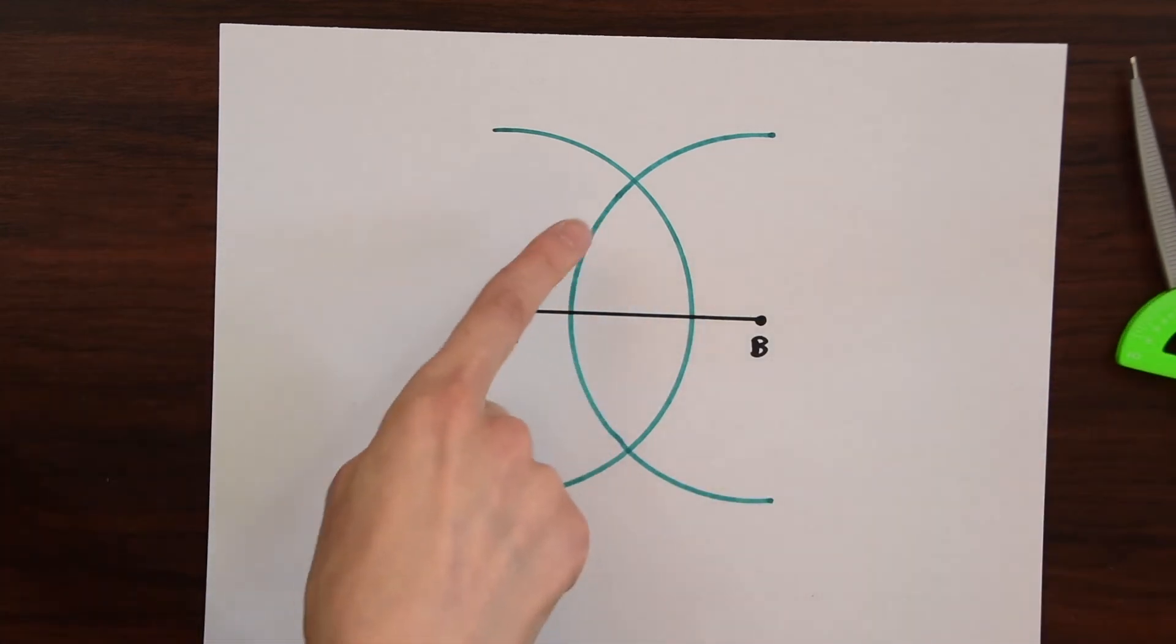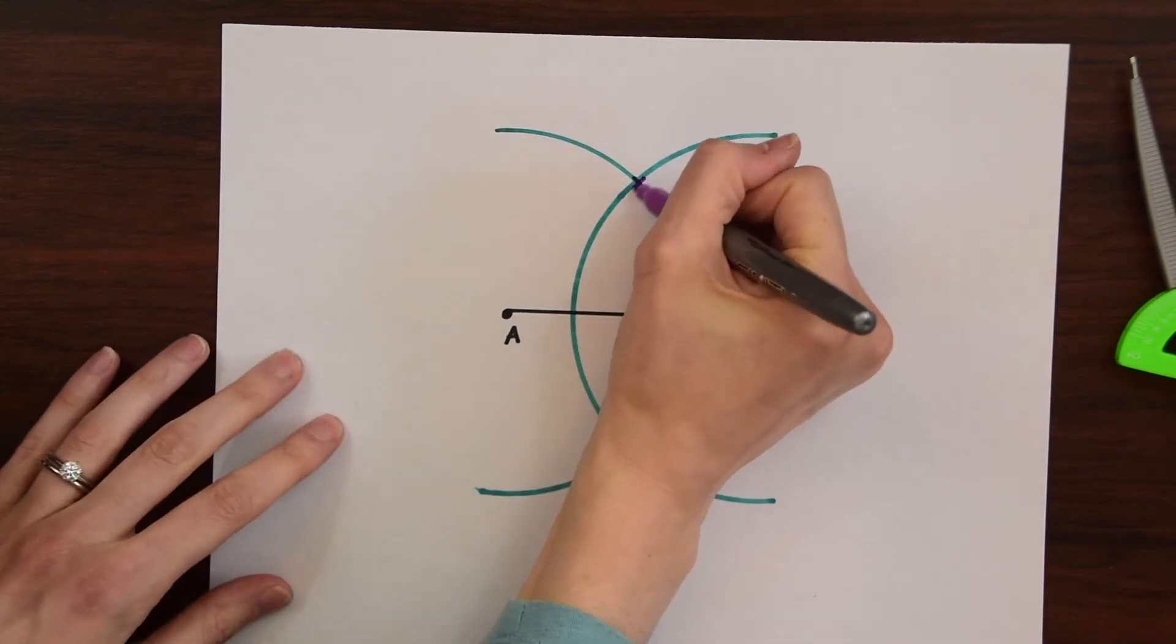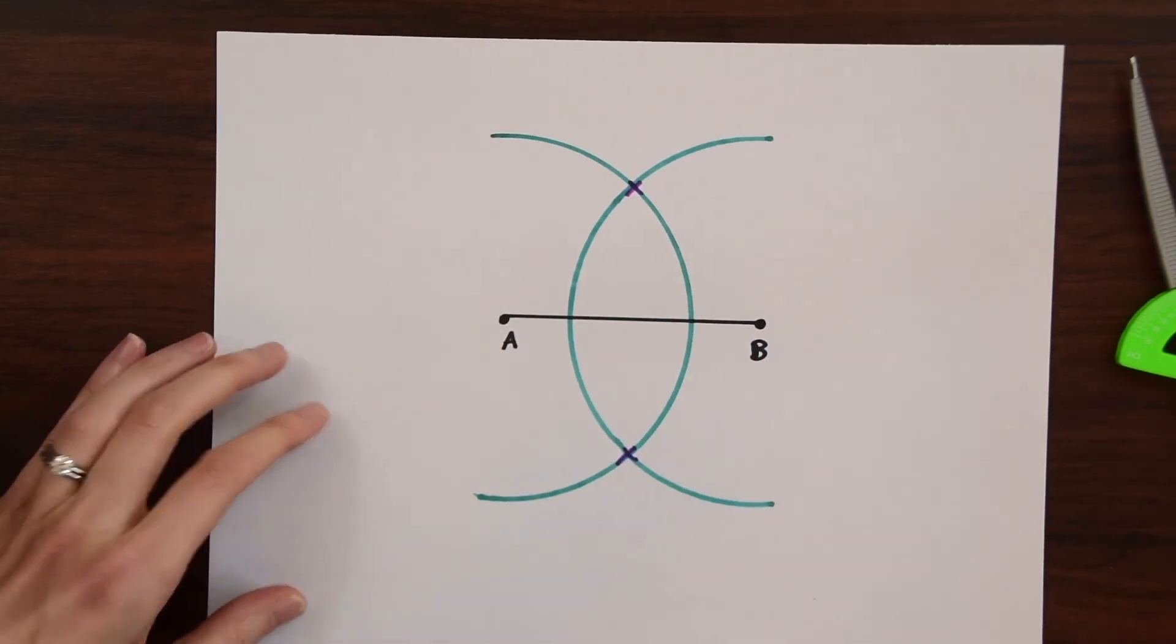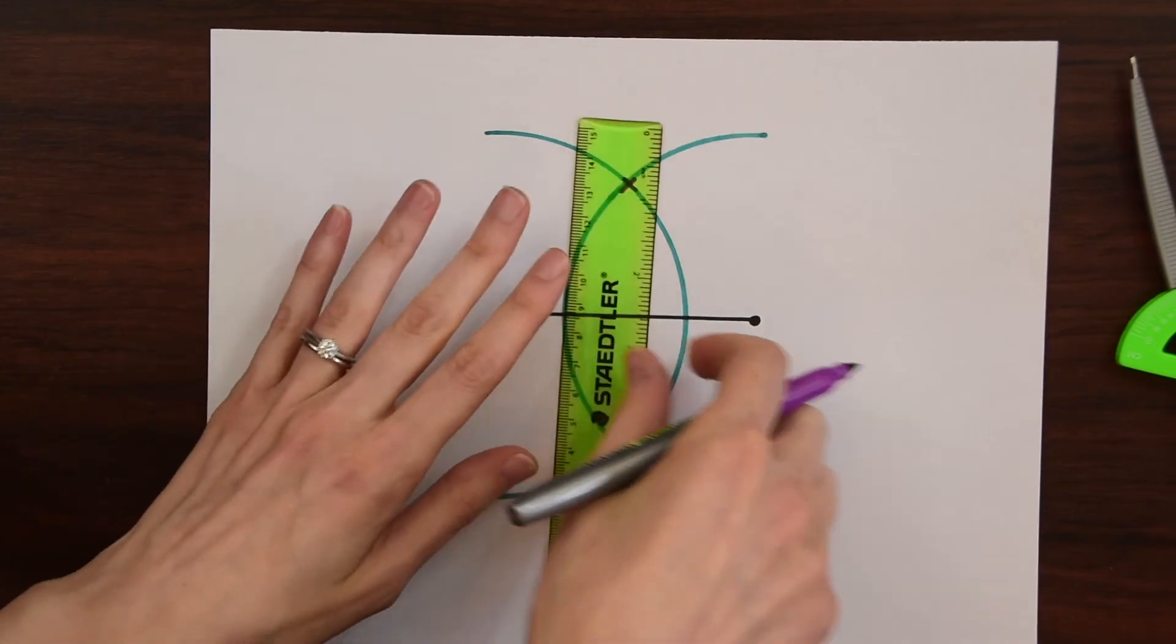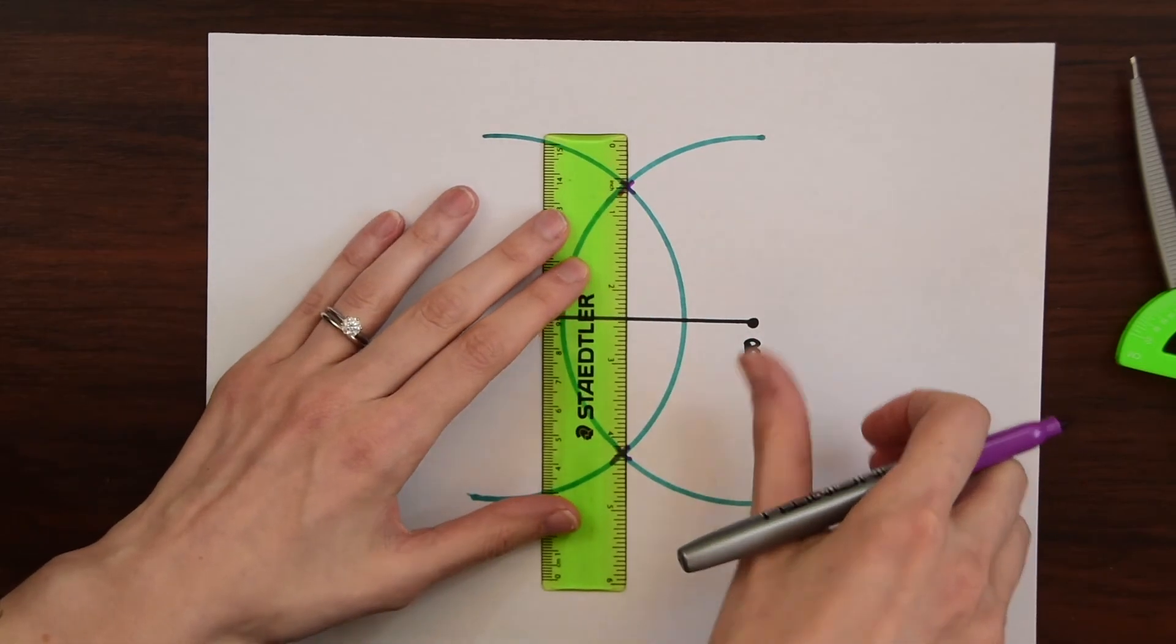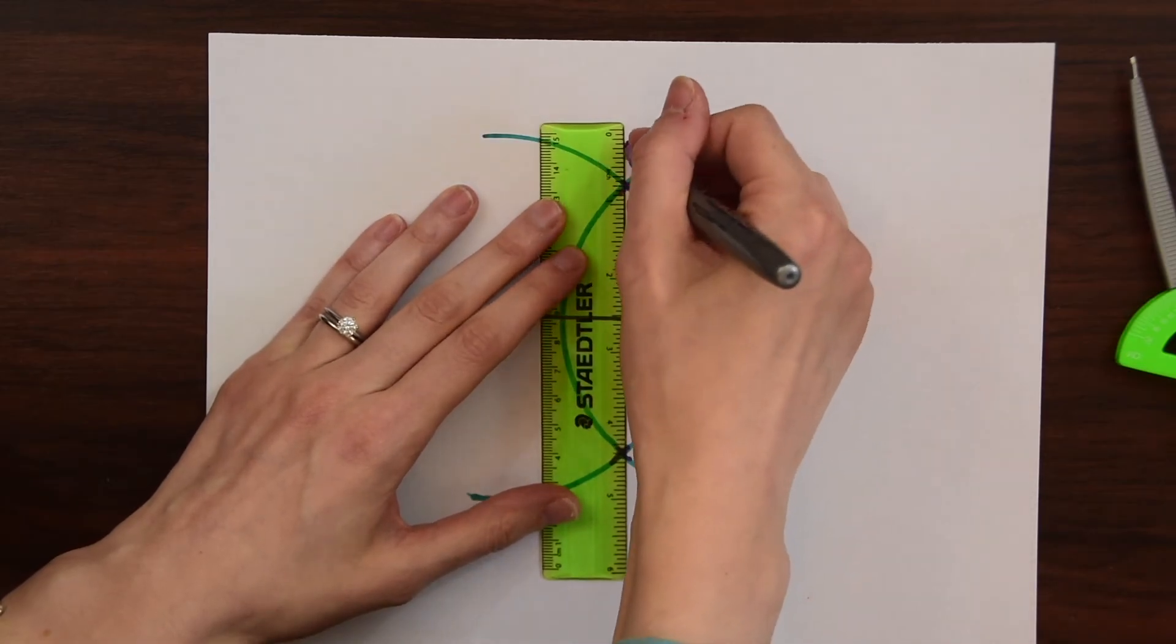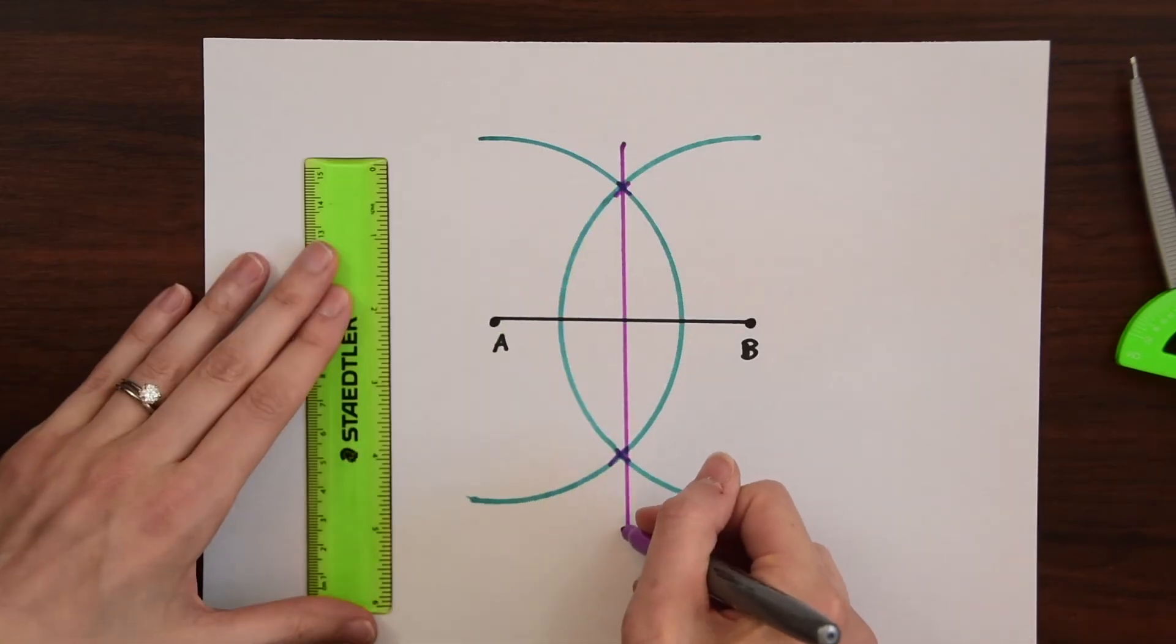So notice we have these two intersections that formed here. We have a spot right here and right here. And all we need to do now to make a perpendicular bisector is connect these two points of intersection. So we'll take our ruler and just connect them like that.